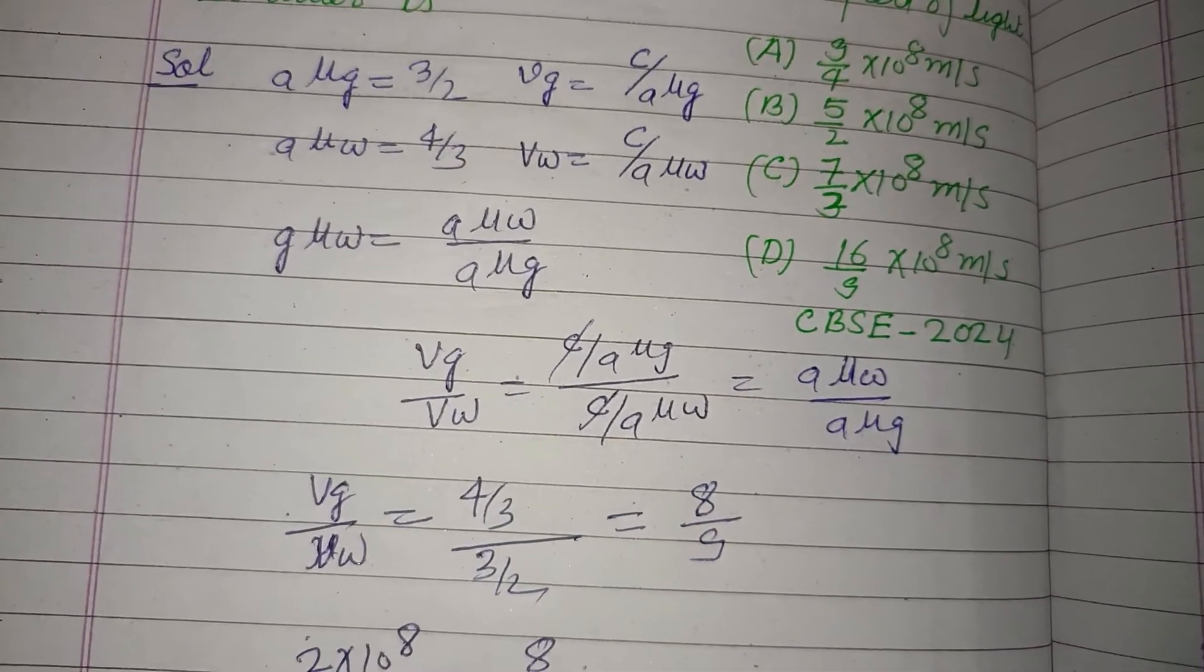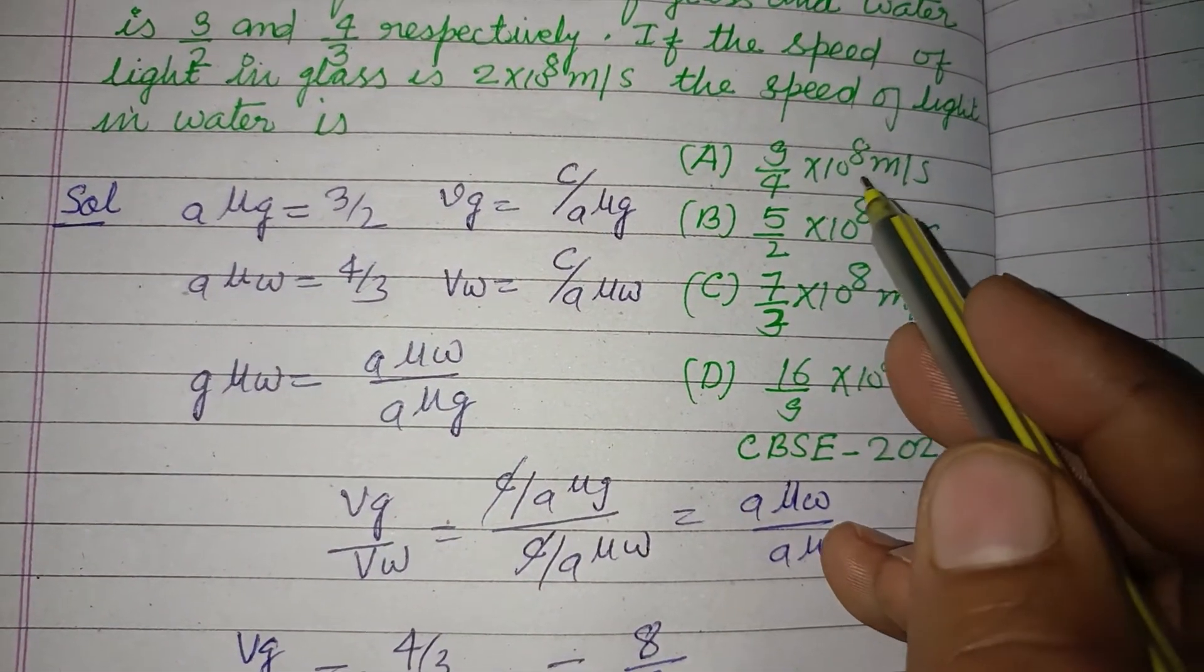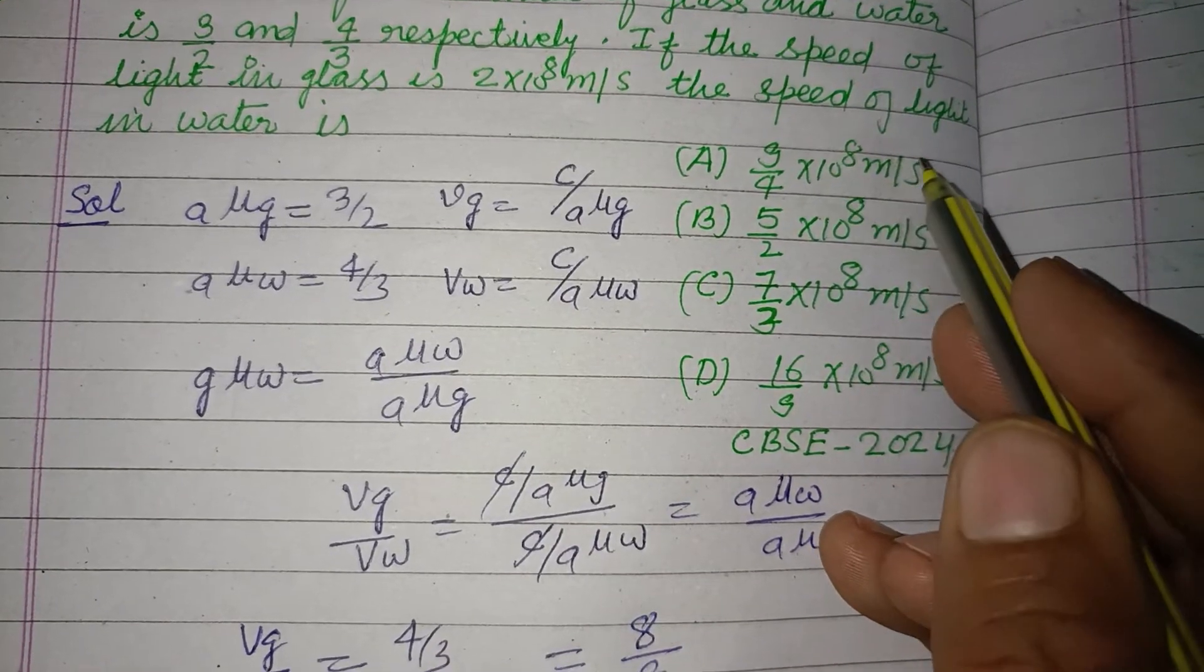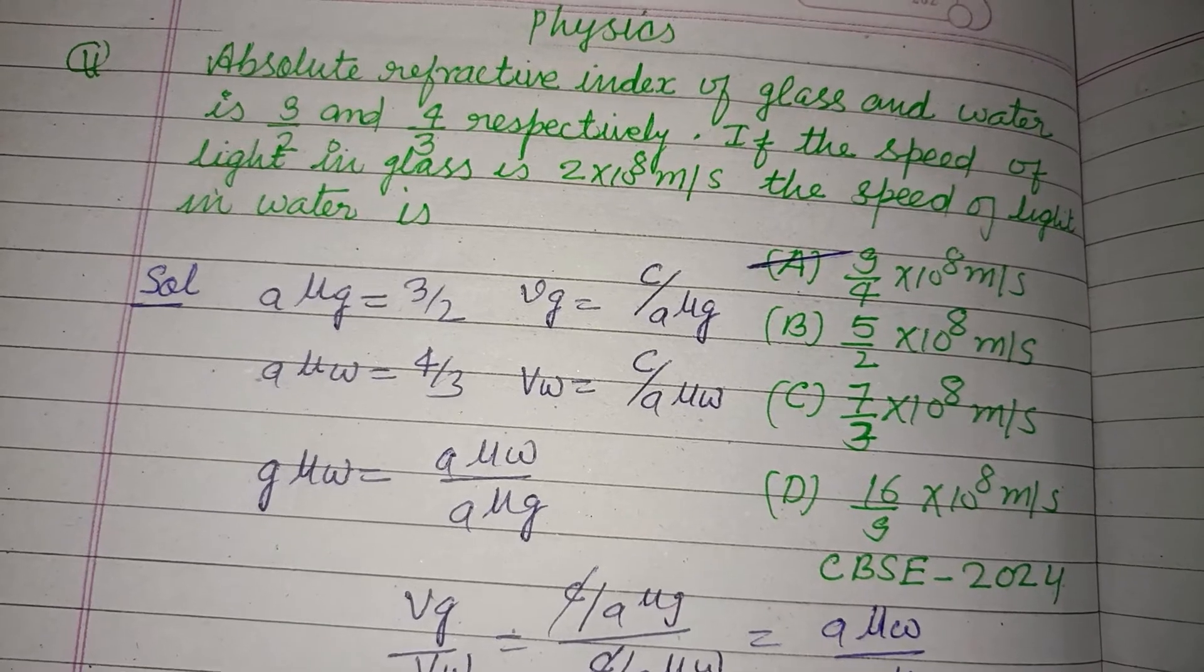So C answer. Correct answer is 9 upon 4 into 10 to the power 8 meter per second. So C is the correct answer of this question.